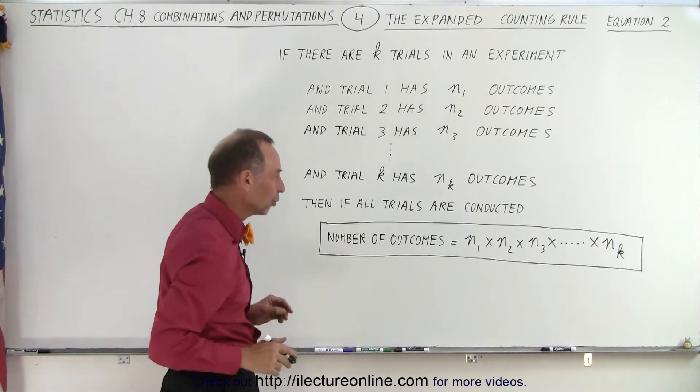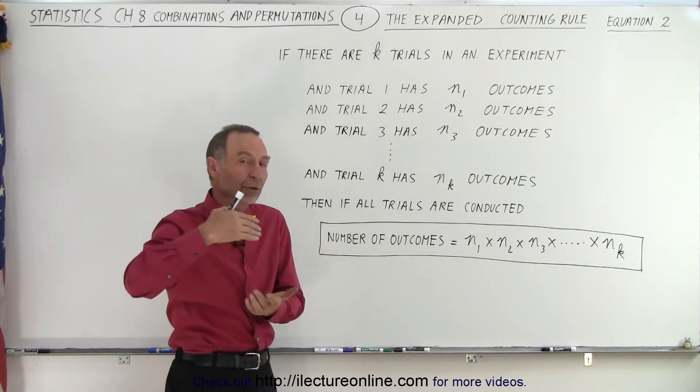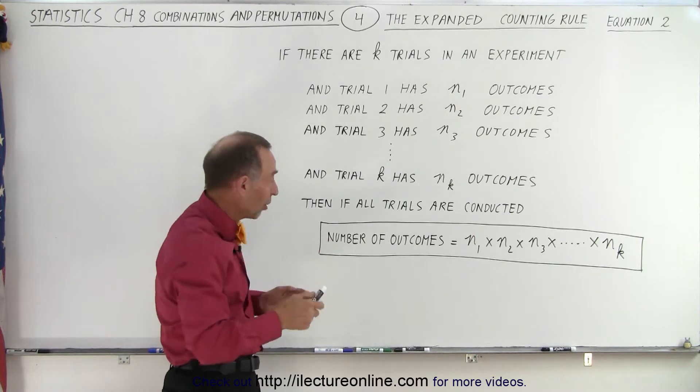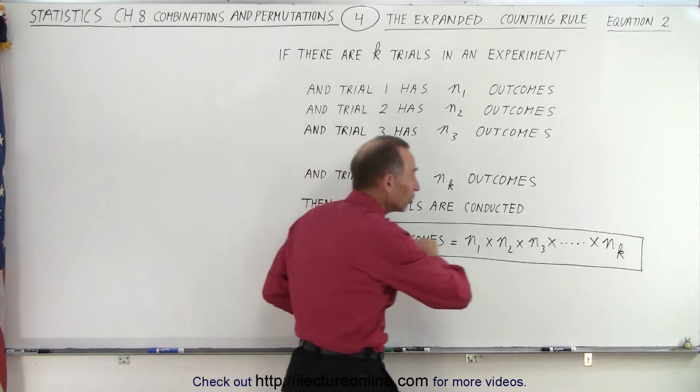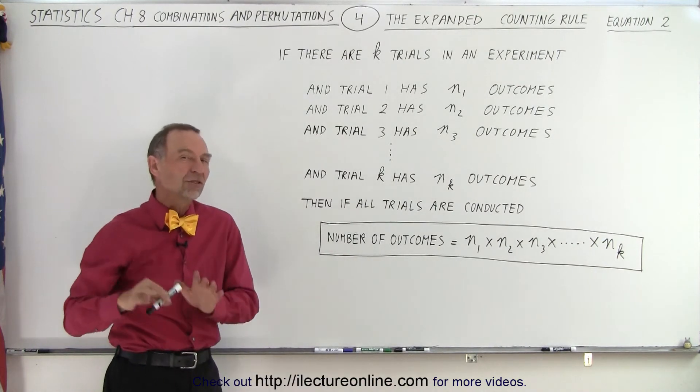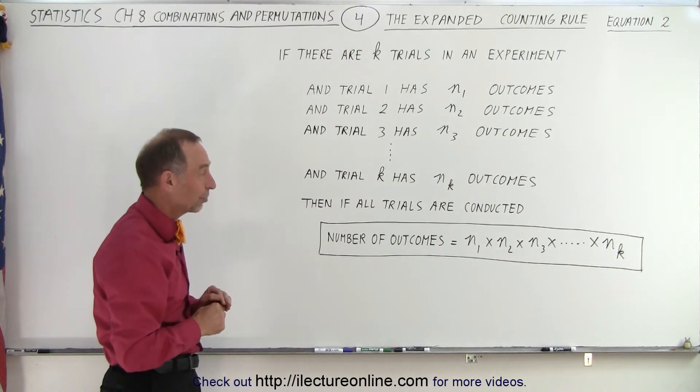But we have to stick to these fundamental rules. When we have multiple trials and each trial has a particular number of outcomes, all we have to do is simply multiply all those outcomes. This is applicable to permutations as well as combinations. You'll see how that works with some examples.